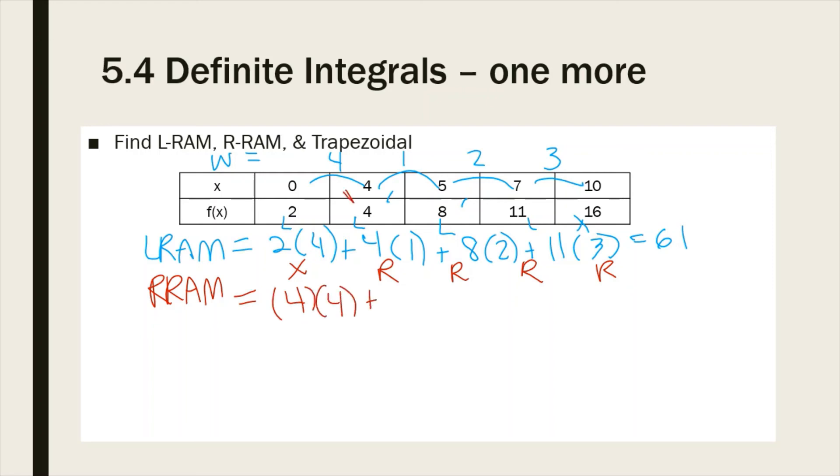We're going to start with 4 times 4. So that was 4 times 4, and 8 times 1, or 1 if you want to put the width first. It doesn't matter. 8 times 1, and 2 times 11, and 3 times 16, so that you can see what's happening here. And so that turned out to be 94.